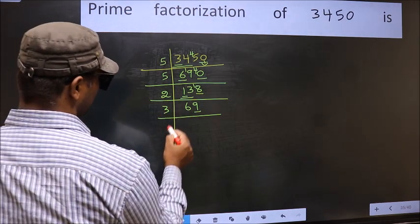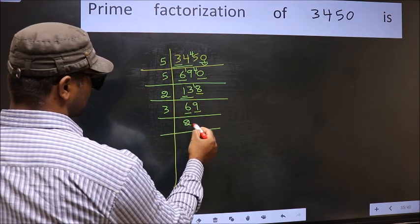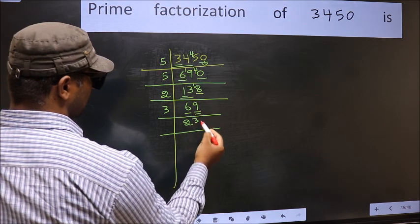So take 3 here. First number 6. When do we get 6 in 3 table? 3 twos, 6. The other number 9. When do we get 9 in 3 table? 3 threes, 9.